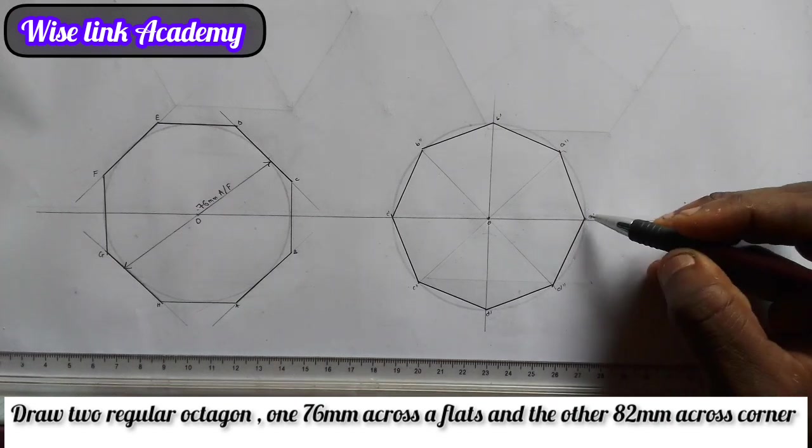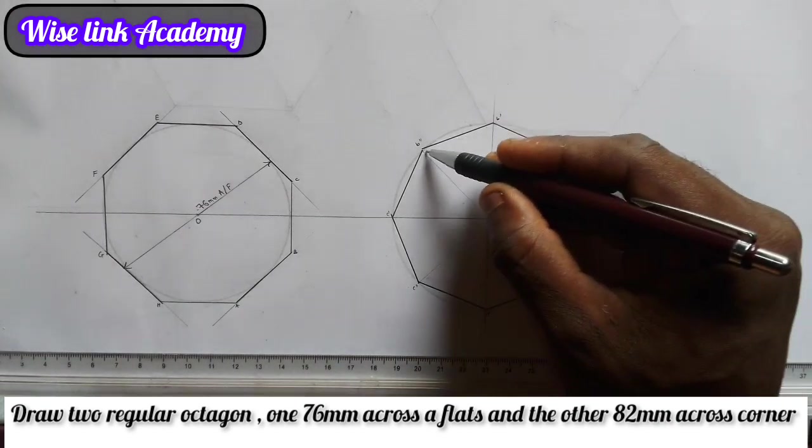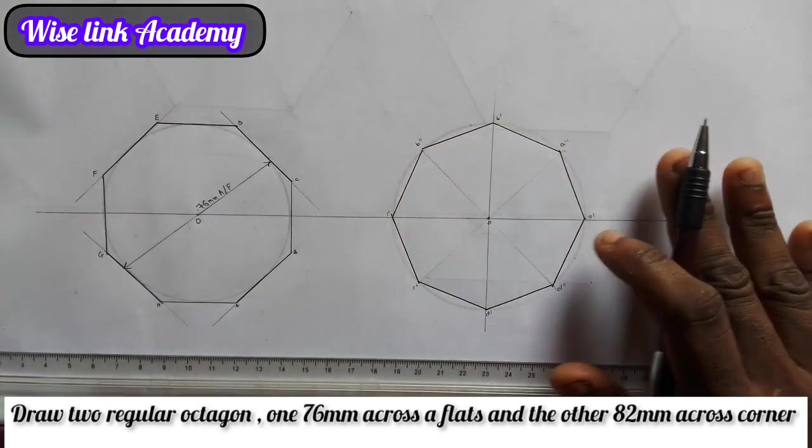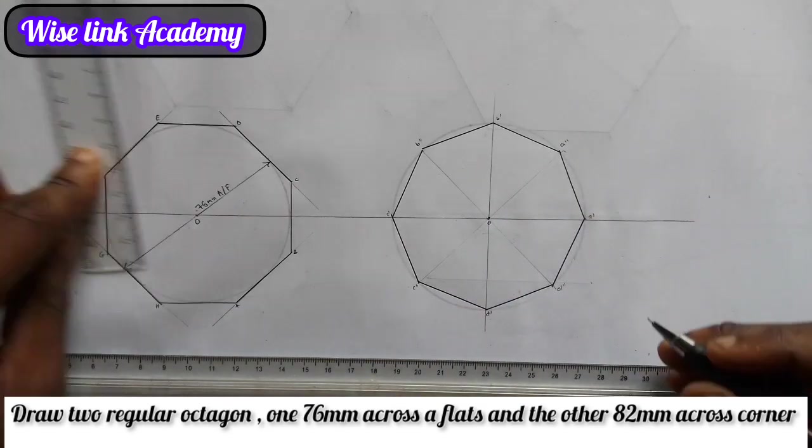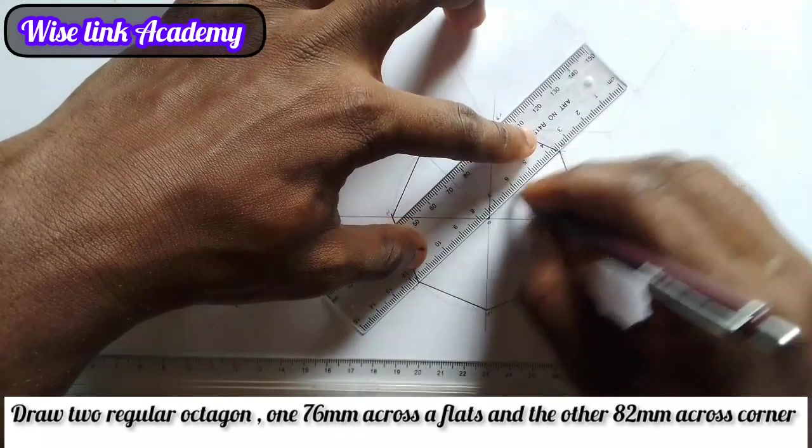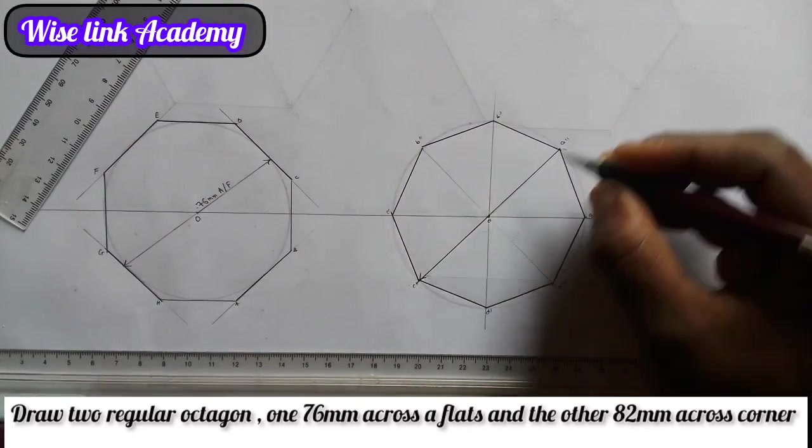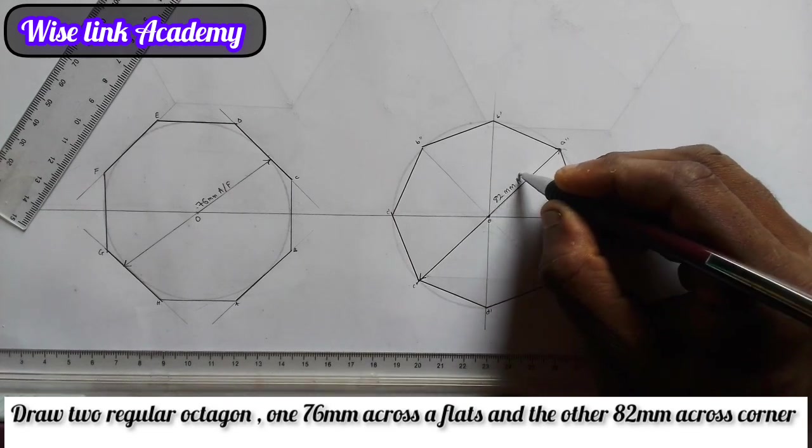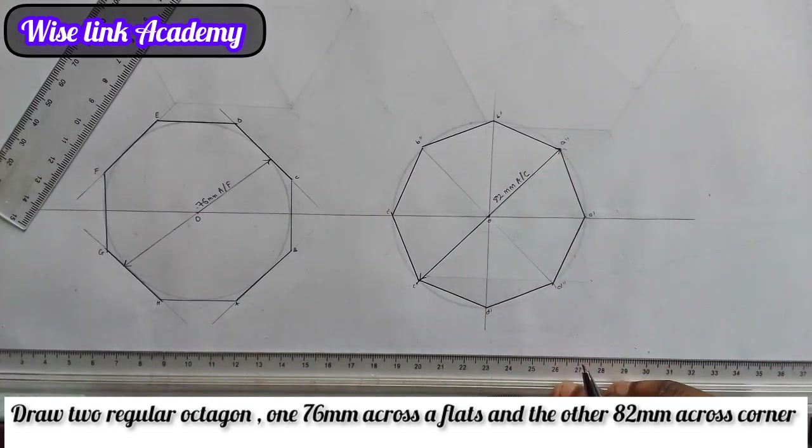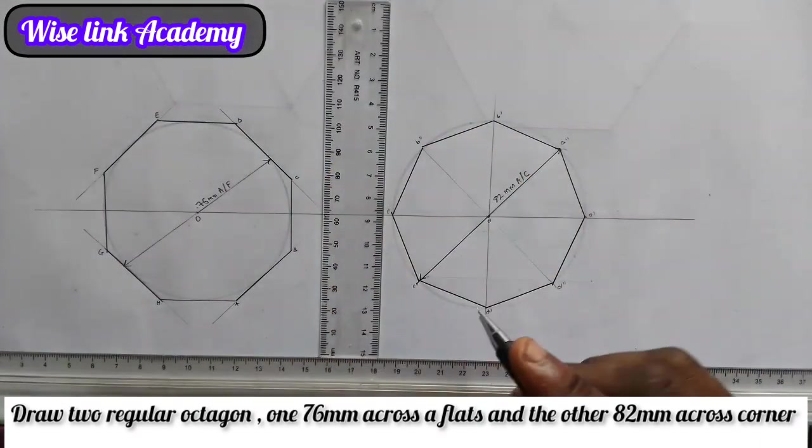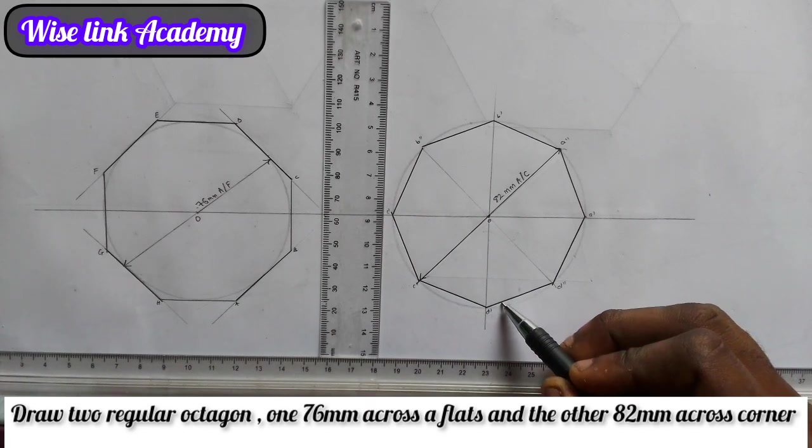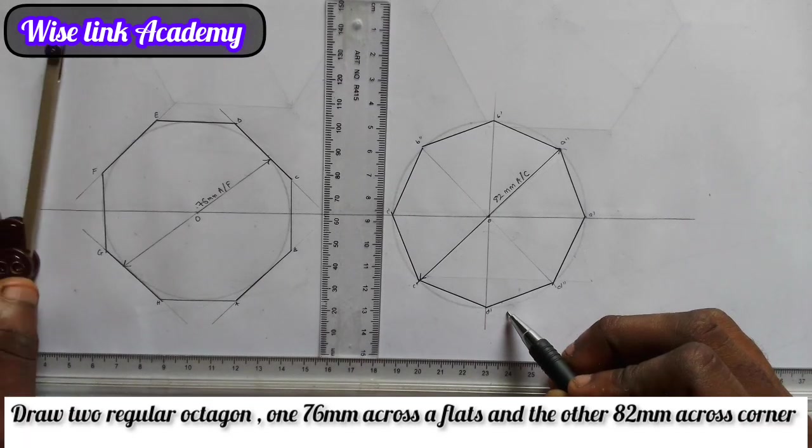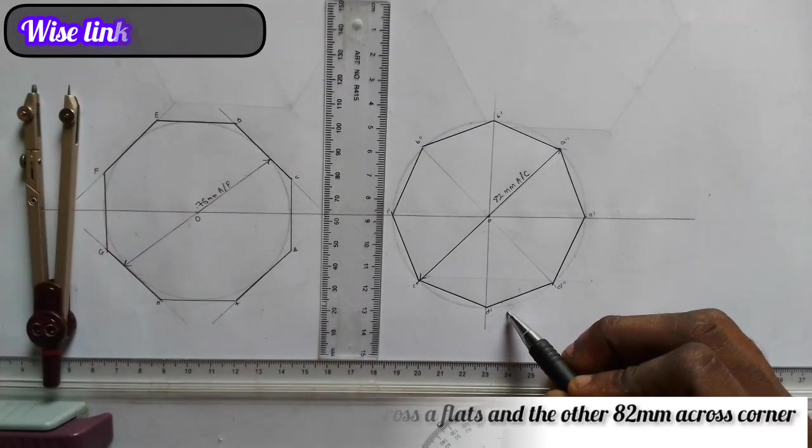So here is what we are told to do. This is 1, 2, 3, 4, 5, 6, 7, 8. So this is my eight-sided octagon across corner. This simply means this point here to this point is 82mm across corner. If you have found this video helpful, do not forget to click on the subscribe button and like. Thank you and welcome to Wiselink Academy. Thanks for watching.